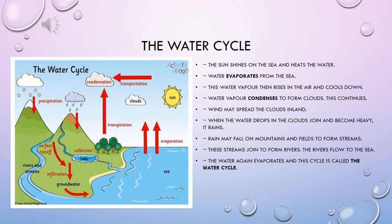Rain may fall on mountains and fields to form streams. These streams join to form rivers. The rivers flow to the sea. The water again evaporates and this cycle is called the water cycle.